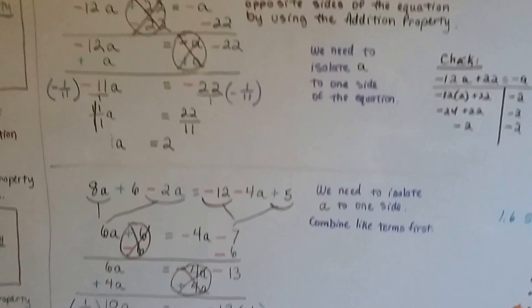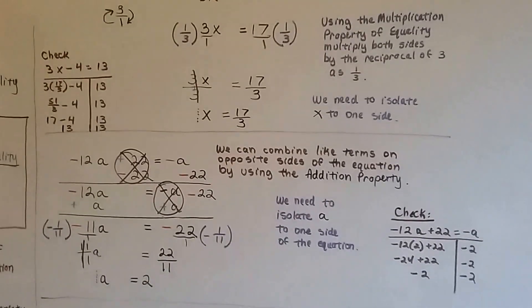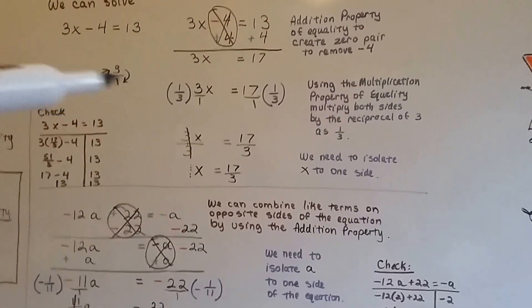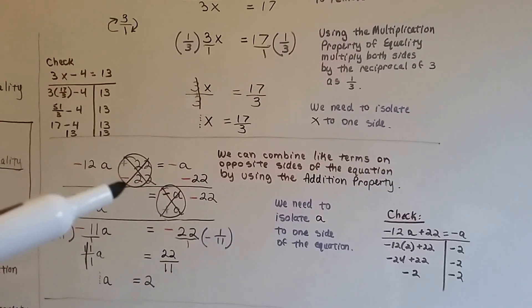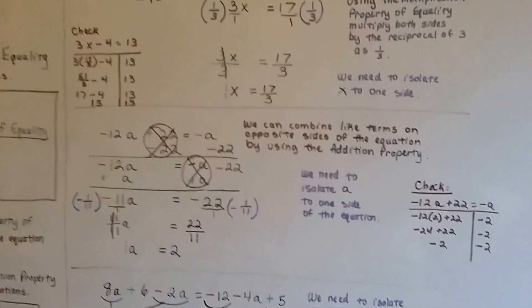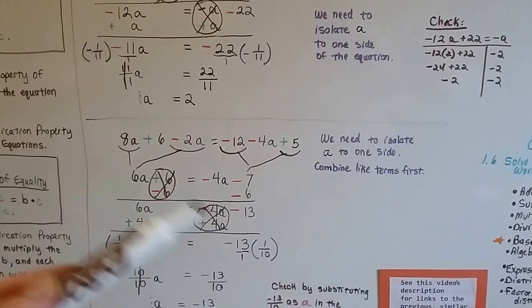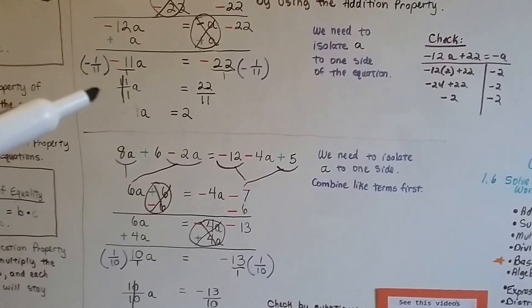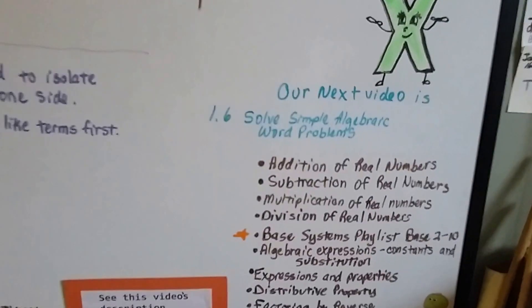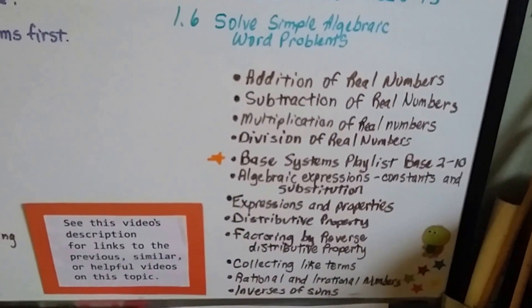There are a lot of steps, but just remember to do the addition property first — which is sometimes subtraction — you're just creating a zero pair. To get rid of minus 4, we added 4; to get rid of plus 22, we took away 22. Do it to each side of the equation to keep the scale balanced. If you need to do it more than once, do it more than once. And remember, when you take the reciprocal, it keeps the negative sign. Our next video is 1.6 and we'll talk about how to solve simple algebraic word problems and write equations for them.